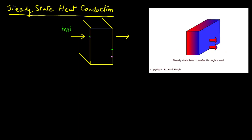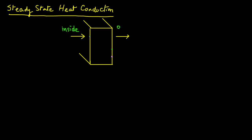Inside was considered to be warm, so the temperature is higher inside, and outside was colder, so the temperatures are lower outside — heat transfer is through this wall from inside to outside. If we assume that both the inside temperature and the outside temperature are constant, meaning they are not changing with time, then the temperature profile will not change. Under these conditions, we will say that the heat transfer through this wall is under steady-state conditions.